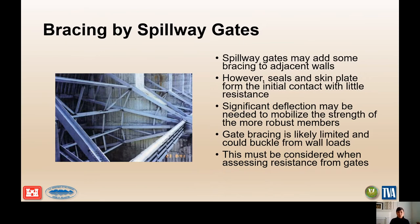If you have a gated spillway, the gates may add some bracing to the adjacent walls. However, seals and skin plates provide little resistance — significant deflection would need to occur to mobilize the strength of more robust members like the girders. Gate bracing is likely limited and could buckle from wall forces. It may be that the retaining wall and pier are adding loads on the gates that could cause gate failure, and this needs to be considered.